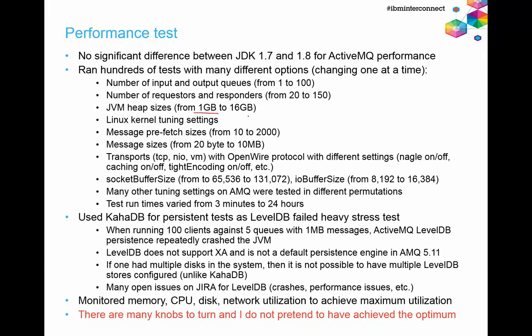To generate workload I varied number of queues, number of server instances (one to four), and number of threads. For ActiveMQ I used different heap sizes from 1 GB to 16 GB, different Linux kernel settings, different numbers of requesters and responders (20 up to 150), input and output queues from 1 to 100, changes to prefetch sizes, different transports (settling on OpenWire as fastest, with varying tight encoding, caching, Nagle settings, socket buffer sizes, and IO buffer sizes). I ran tests from 3 minutes up to 24 hours, with final results averaged over six independent 1-hour test runs.